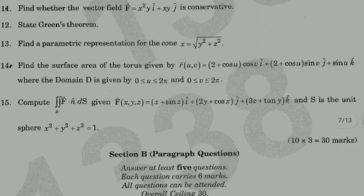Find a parametric representation for the cone x = √(y² + z²). This is a parametric representation. The last example of the Calculus of Multivariable is called the cone.